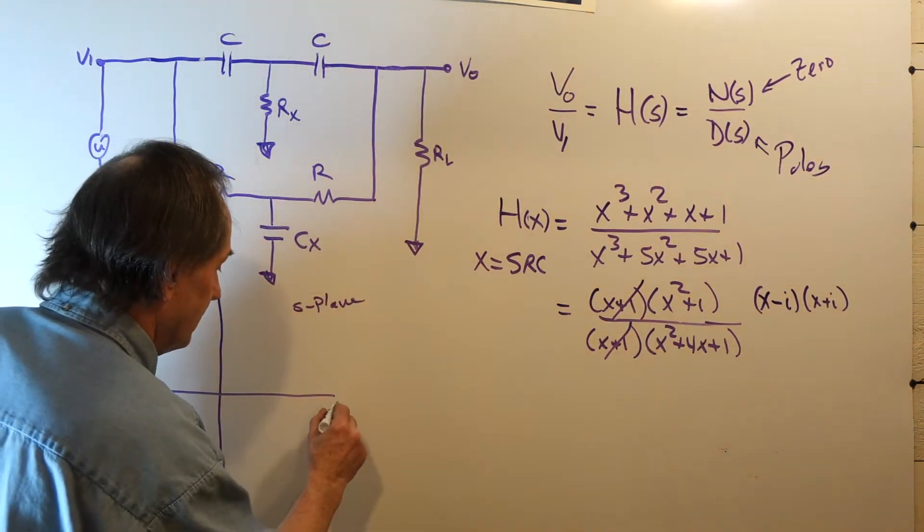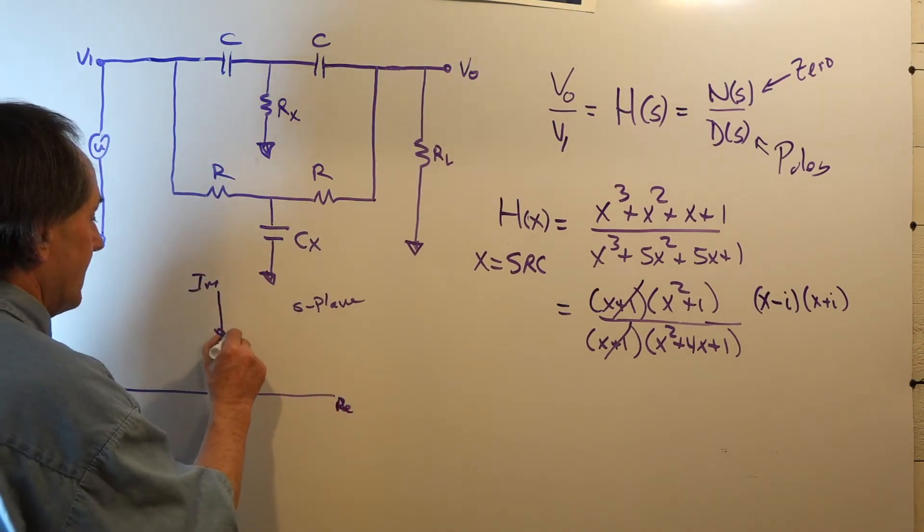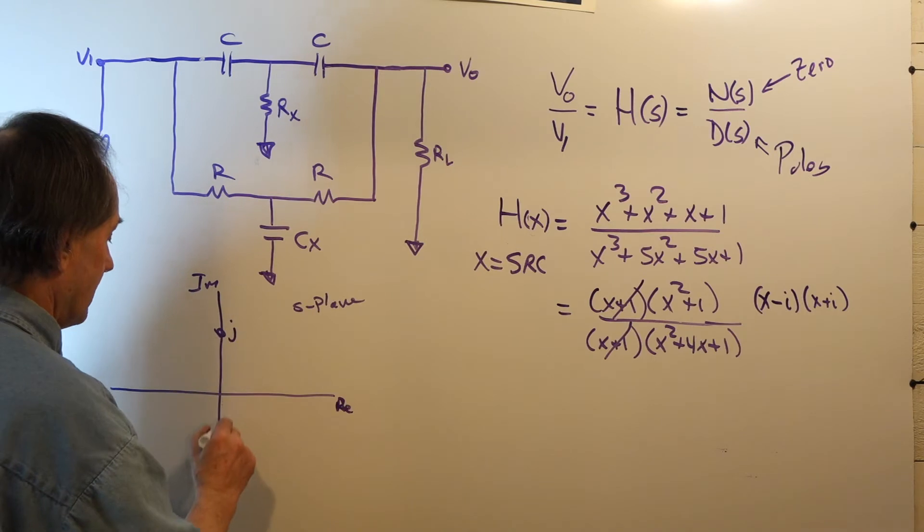If this is the real axis, we're in the complex plane, and this is the imaginary axis. At J1 and minus J1, we have our zeros.